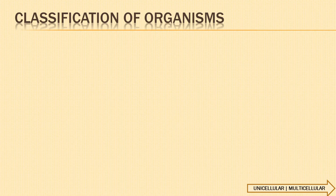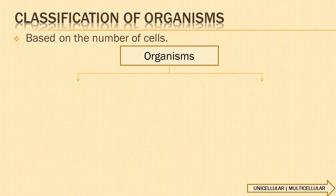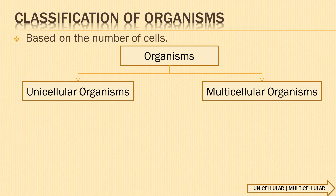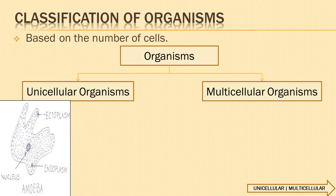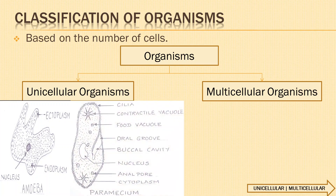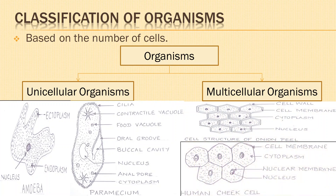Next, we will classify organisms based on the number of cells into unicellular organisms and multicellular organisms. Uni means one — organisms which are made up of only one cell are known as unicellular organisms; examples are amoeba and paramecium. Multi means many — organisms which are made up of many cells are known as multicellular organisms; examples are humans and flowering plants.